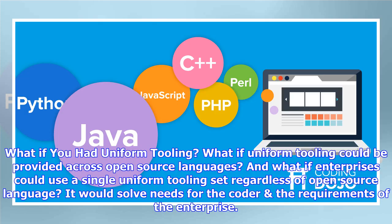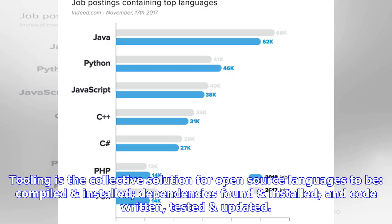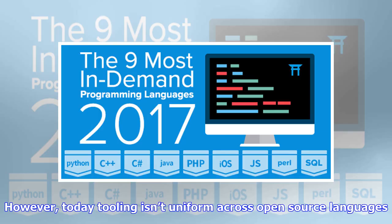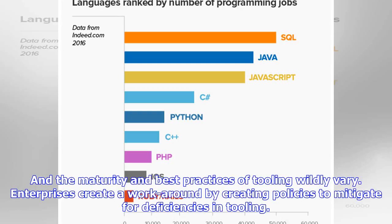What if you had uniform tooling? What if uniform tooling could be provided across open source languages? And what if enterprises could use a single uniform tooling set regardless of open source language? It would solve needs for the coder. Tooling is the collective solution for open source languages to be compiled. However, today tooling isn't uniform across open source languages.